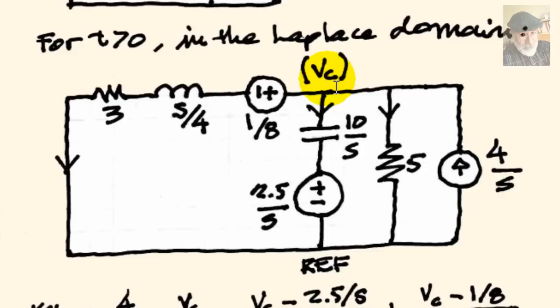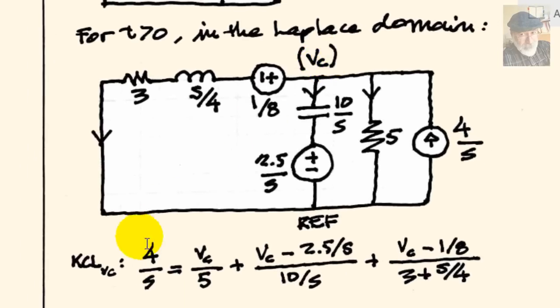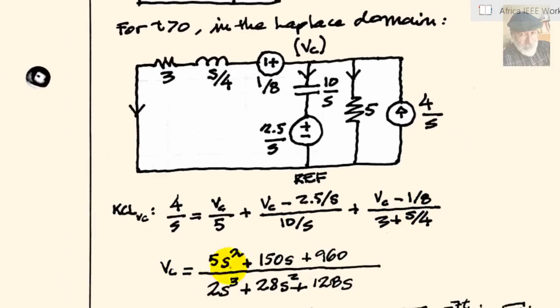Reference node at the bottom, node 1 at the top. But observe that V1, the voltage of the top node, is just the voltage of the capacitor VC, so I will call that just VC. One KCL equation for that node, VC, currents going in, only one. 4 over s currents leaving the node, the one here, which is VC divided by 5. And this one, VC minus the source, 2.5 over s, divided by the impedance 10 over s, plus the one on the left, VC minus 1 eighth, divided by the impedance 3 plus s over 4. Use your HP50G, or do it by hand, solve for VC in the Laplace domain, and you get the ratio of polynomials right here.